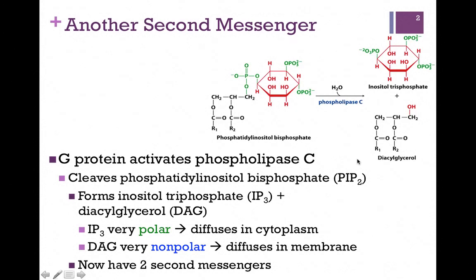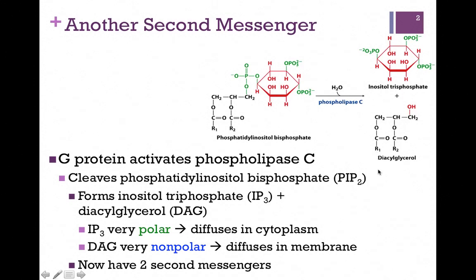Now let's look at diacylglycerol. There's our glycerol backbone and our two fatty acid chains — very hydrophobic. The only polar part of this molecule is that OH, and so it will associate with those lipid head groups in the membrane. You might think this couldn't be a second messenger, but it actually is — it's diffusable in the membrane. So here we have a phospholipid already present in the membrane, and all we have to do is clip one bond, and now we have not just one but two second messengers: one we can send on a message inside the cell, and the other we can send with the message in the membrane.